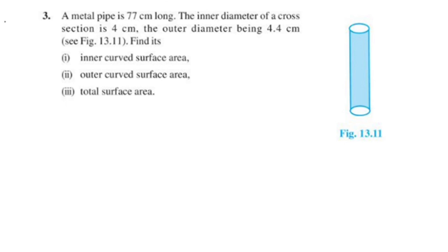Next, the third question. A metal pipe is 77 centimeters long. The inner diameter of a cross section is 4 centimeters, and the outer diameter is 4.4 centimeters. Find its inner curved surface area, outer curved surface area, and total surface area. The metal pipe is 77 centimeters long — this is the height of the pipe.